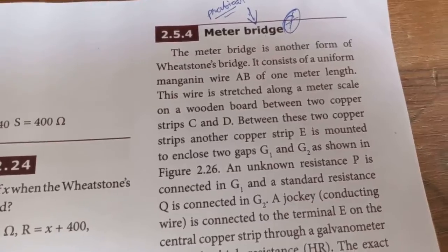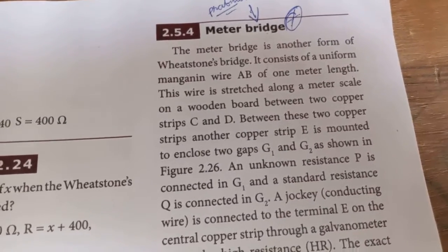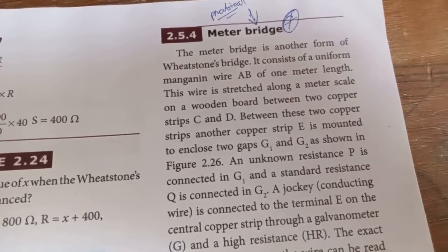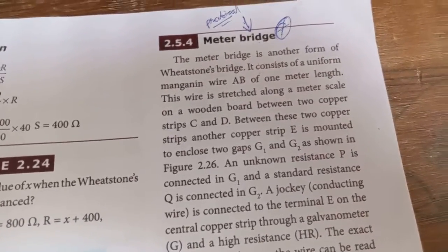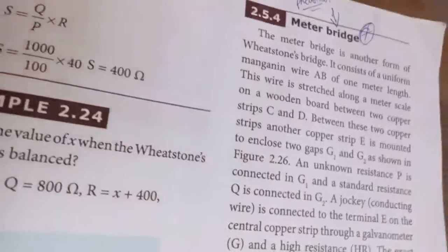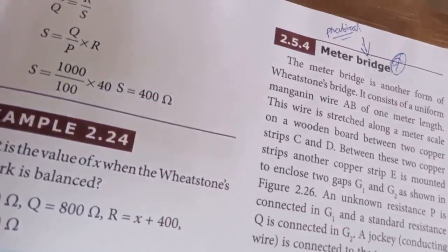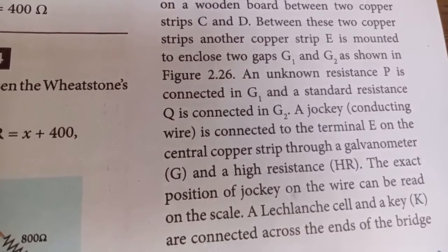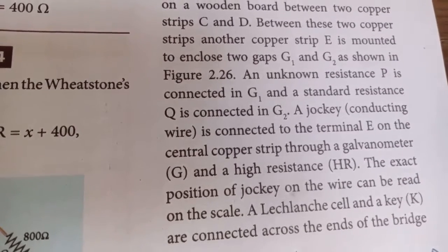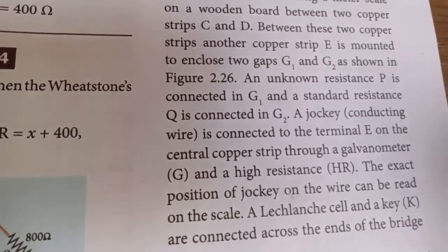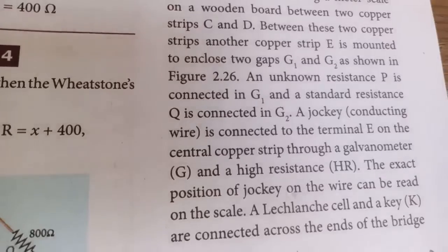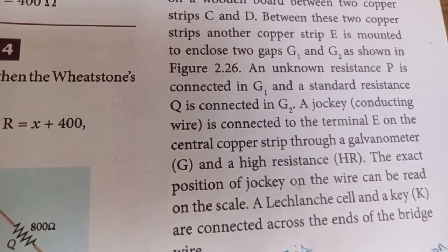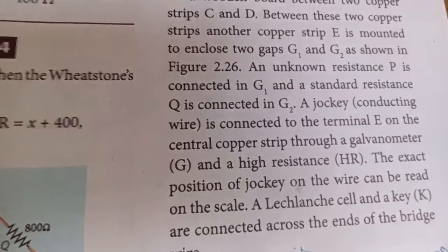Between the two copper strips C and D, another copper strip E is mounted to enclose two gaps G1 and G2 as shown in the diagram. Unknown resistance P is connected in gap G1. Standard resistance Q — meaning a dial box with a known resistance value — is connected in gap G2.